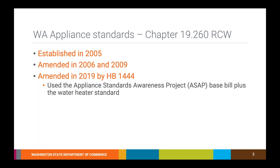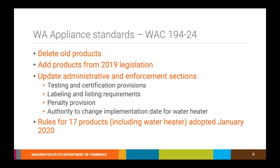That bill passed, and in implementing it we're also updating our administrative code, which includes deleting all the old preempted products and adding 17 new products, including this water heater design requirement. We have the authority to update administrative and enforcement sections — the administrative code includes testing and certification provisions, implementation dates, labeling and listing requirements, and a penalty provision. There was also a lot of work figuring out the implementation date for the water heater because it was first in nation. Washington is sort of a fast follower behind folks like California, tending to reference things that already exist like Energy Star or CEC, so this was brand new territory.